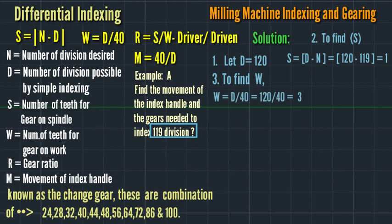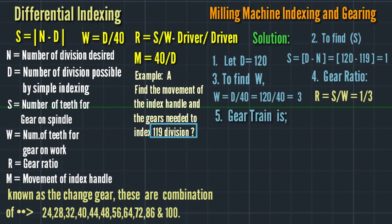For the gear ratio, we use the formula R equals S divided by W. So 1 divided by 3, that is 1/3. For the arrangement of gear or gear train, we use S divided by W.